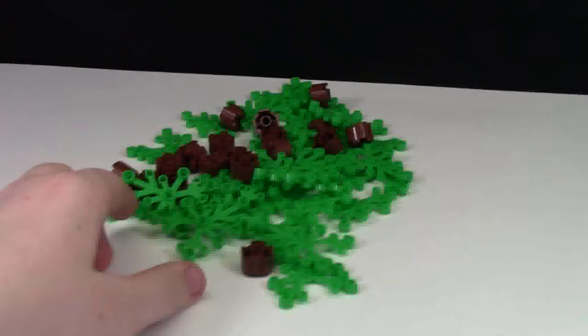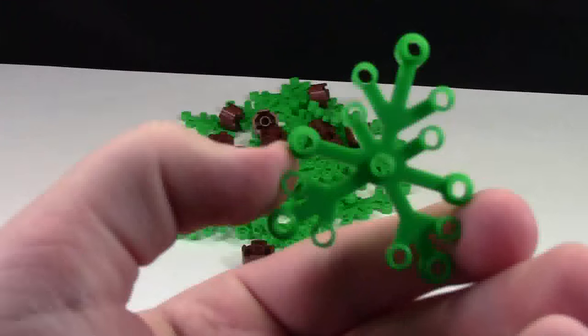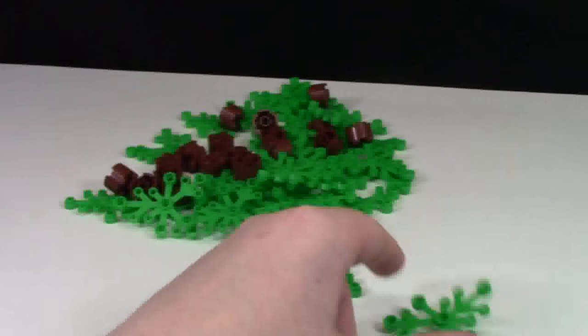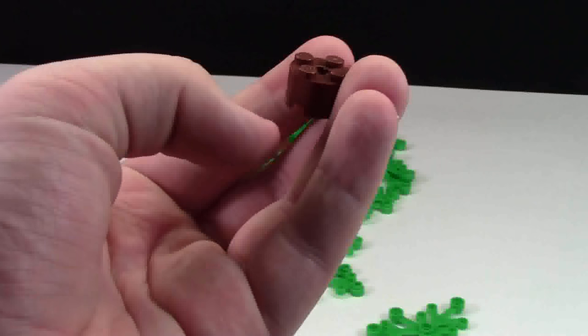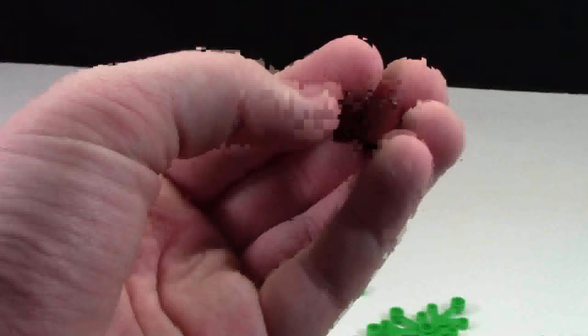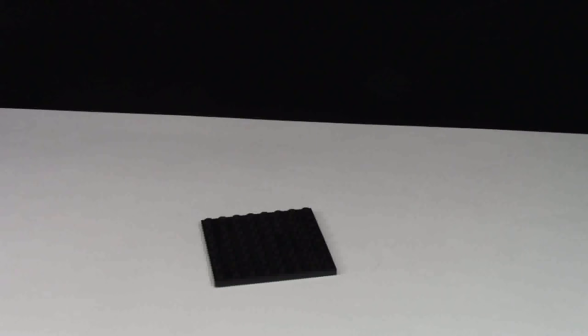There's only two different pieces: this one leaf piece as well as this one 2x2 dark or reddish brown circle brick piece here. Now the next thing you need is a base plate or an area to make your tree. You don't really need a base plate, but for the sake of this video I'm going to use one just because it's kind of hard to hold the tree and film at the same time.